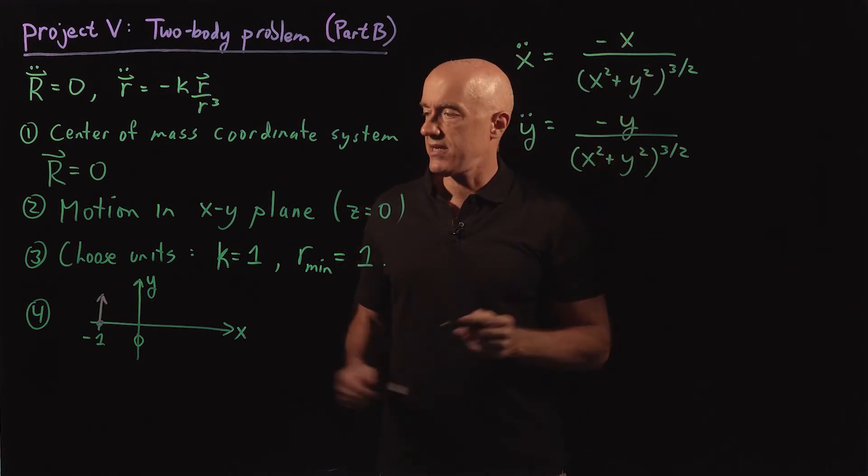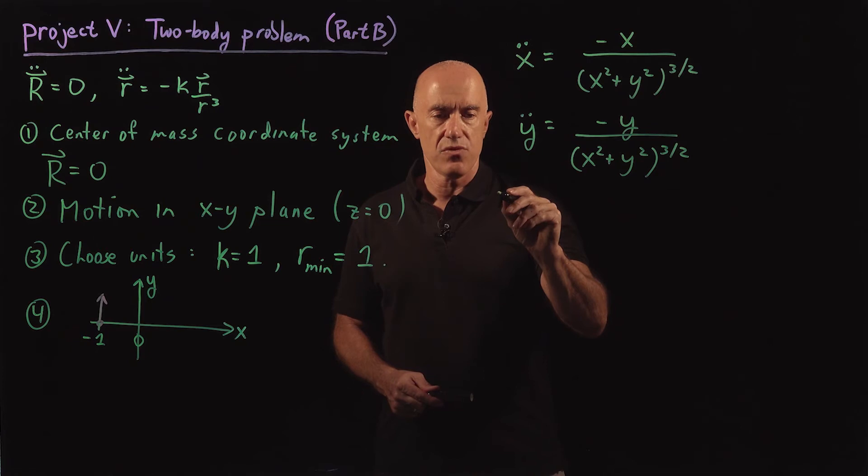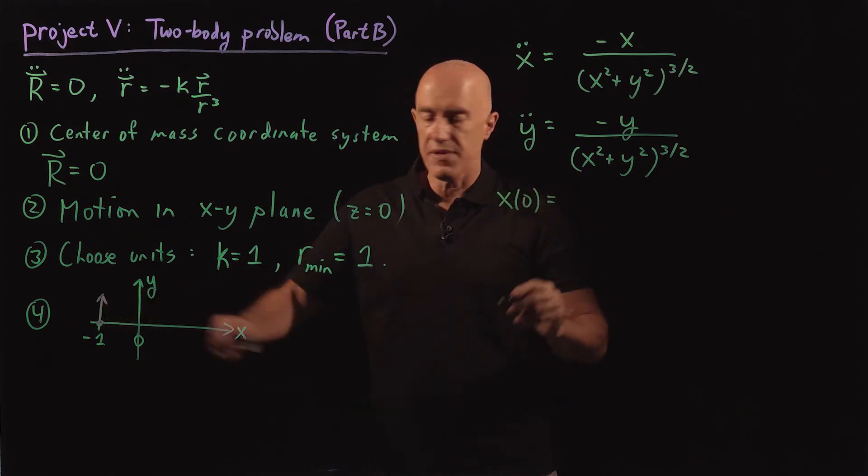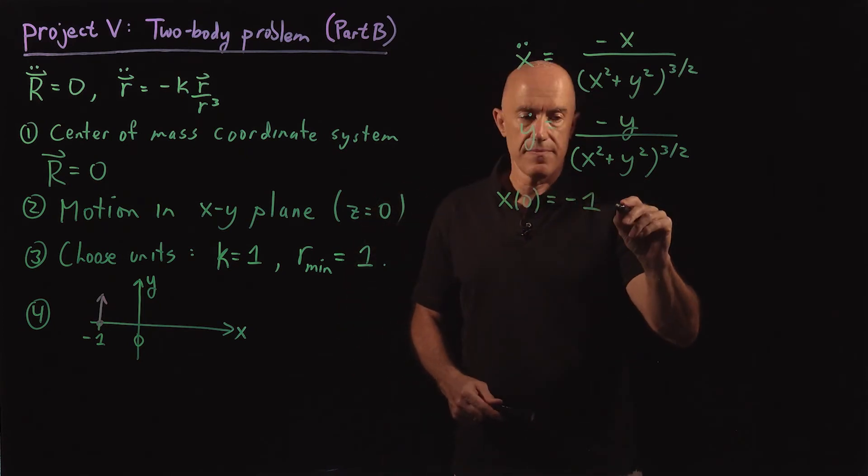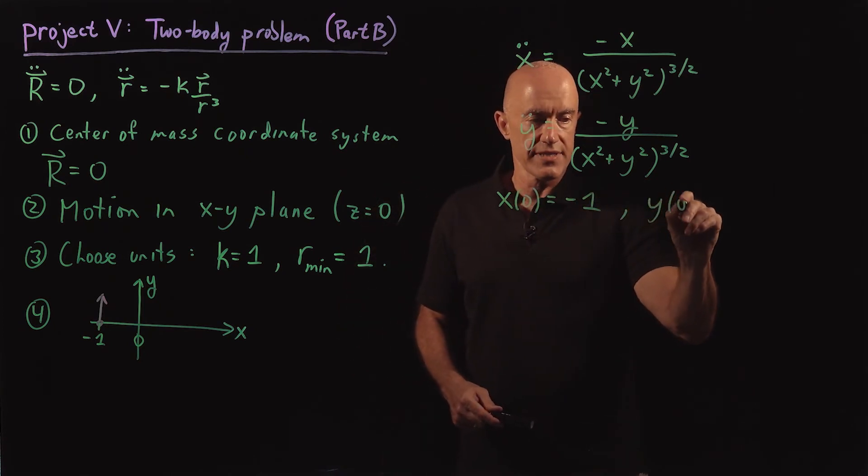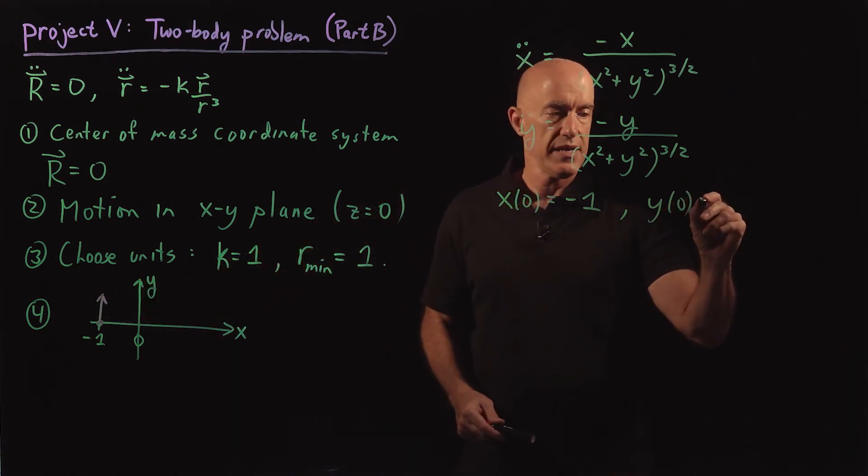The other thing we need is the initial conditions. So the initial condition here will be for x of zero, that will be equal to minus one. Y of zero. We're setting up the coordinate system. So initially it's at y equal to zero.